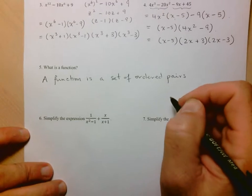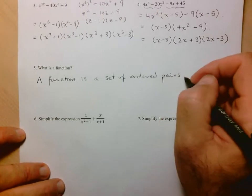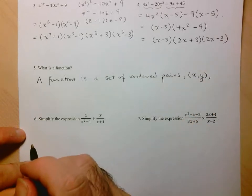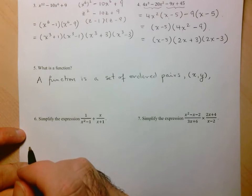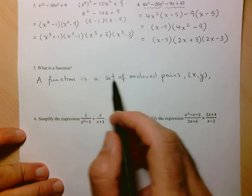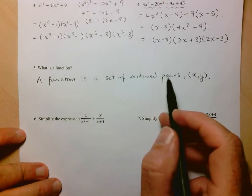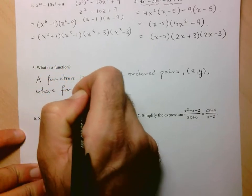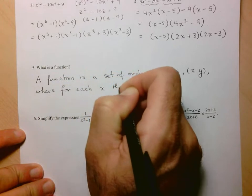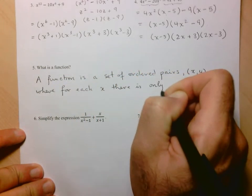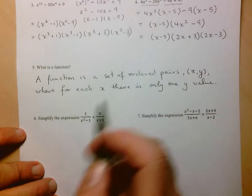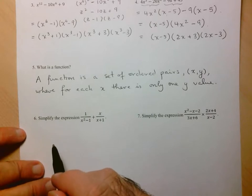So one way of writing this would be a function is a set of ordered pairs. Now, instead of talking about input and output, it will be a little quicker to write x and y. So I'll show that my ordered pairs are represented by this pair x, y. So this tells me that, yes, it is a relation. But now I need to specify that where for each x there is only one y value. So this would be one acceptable answer. You can definitely write this in many different ways.